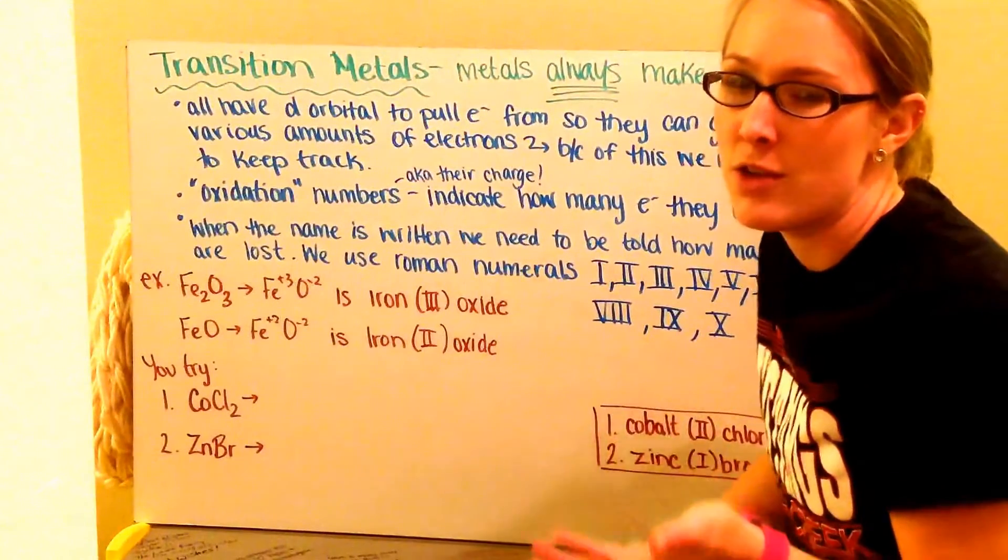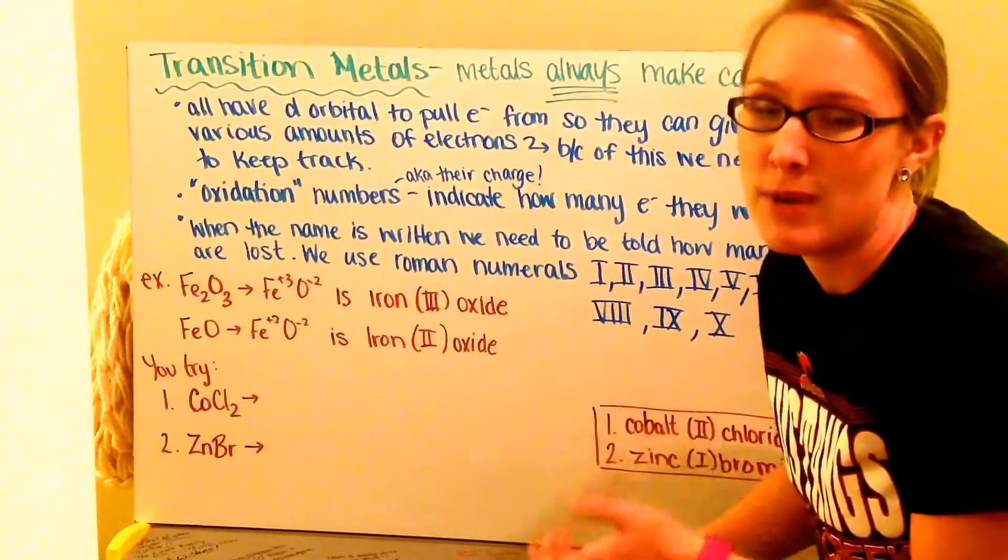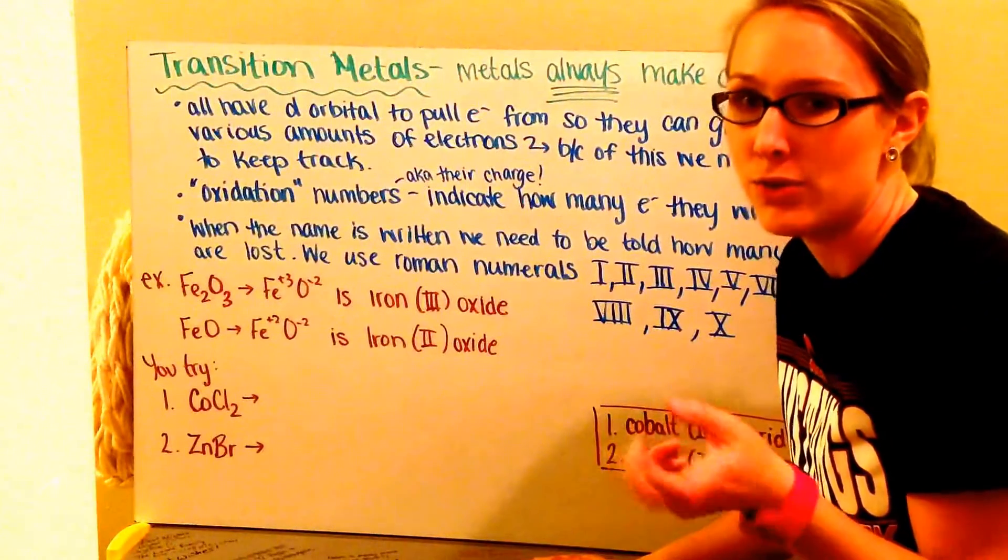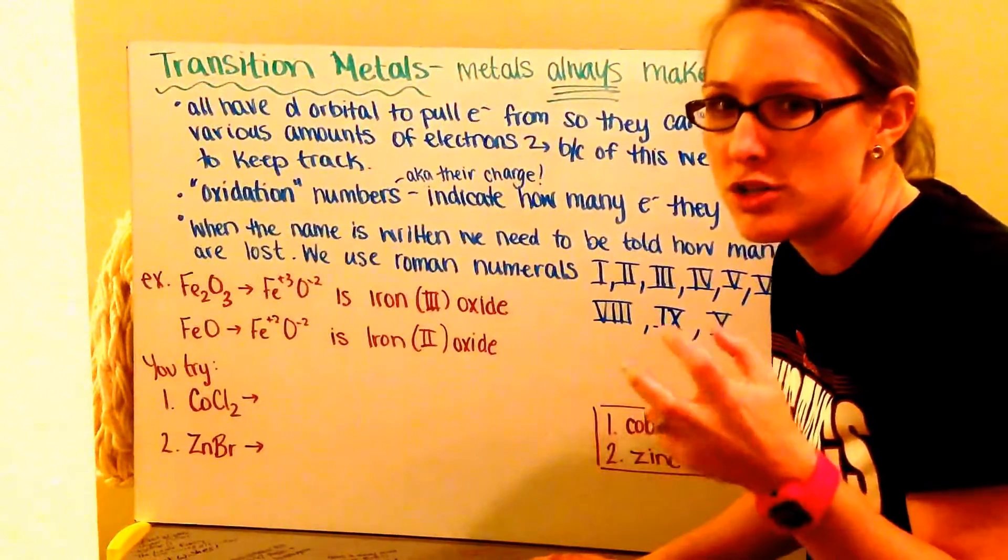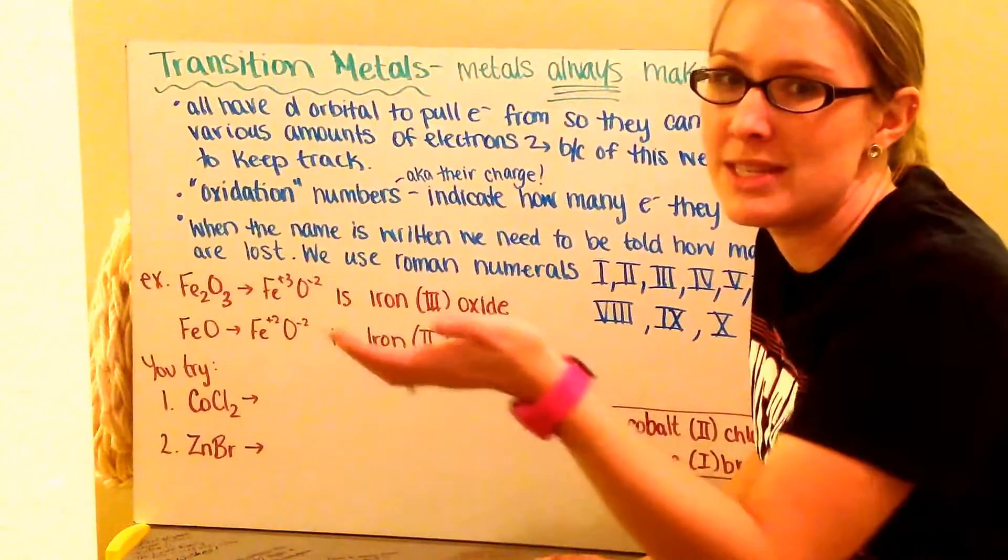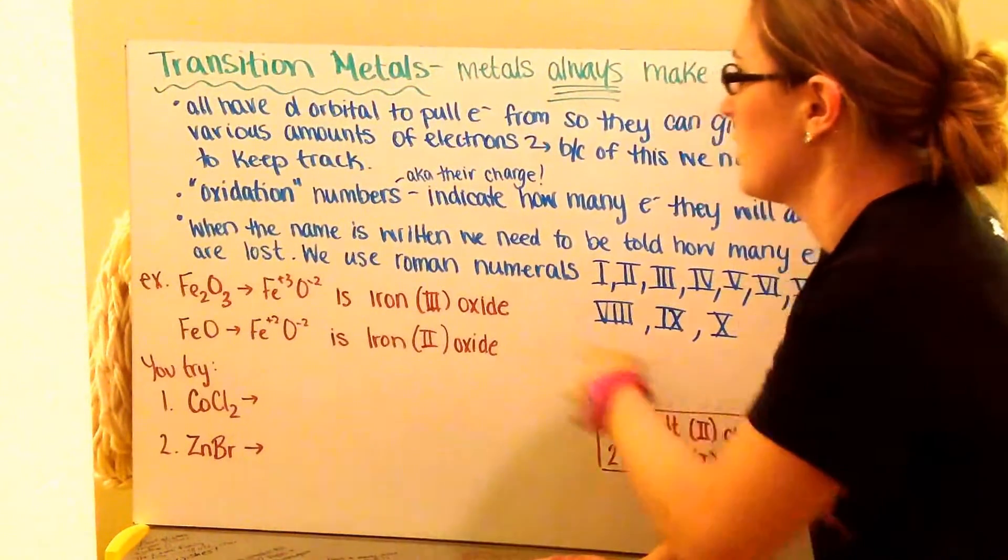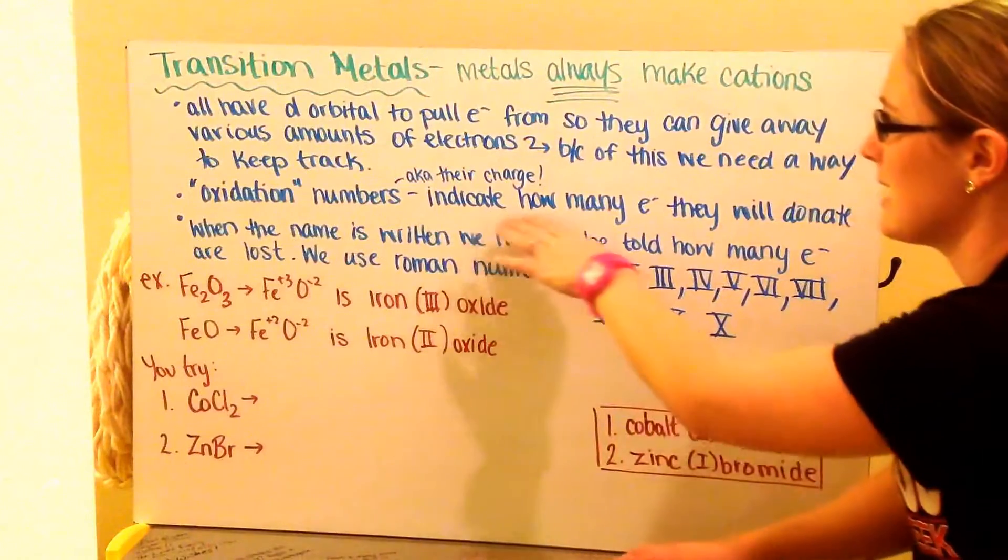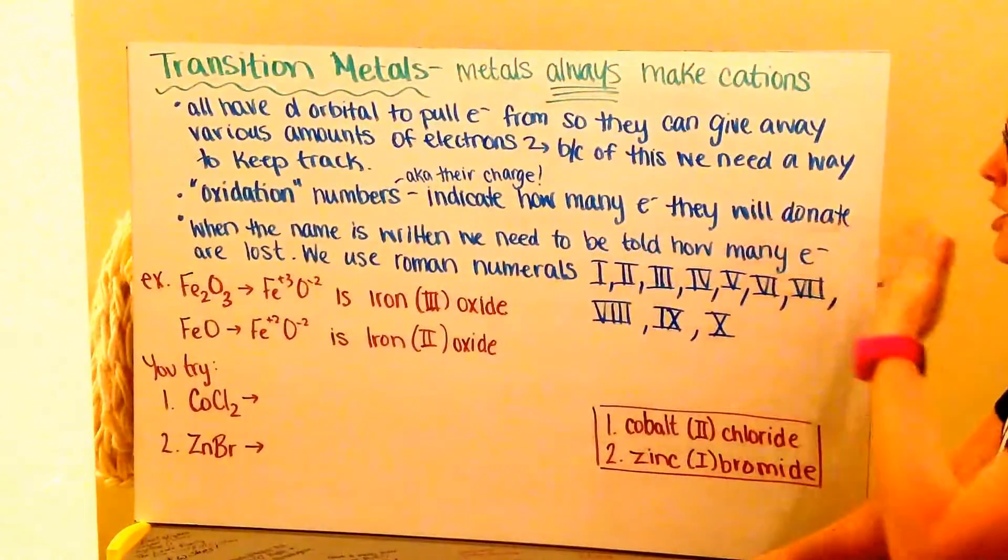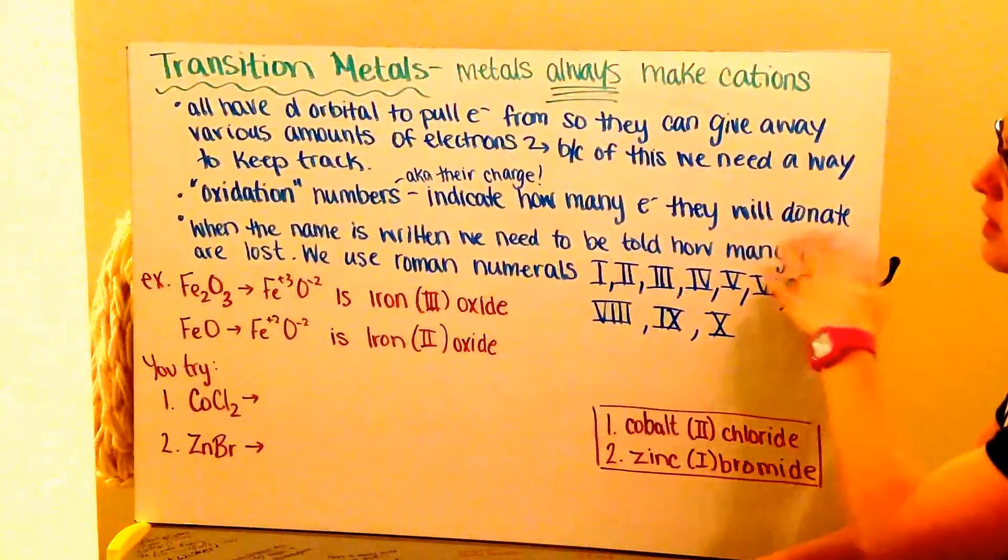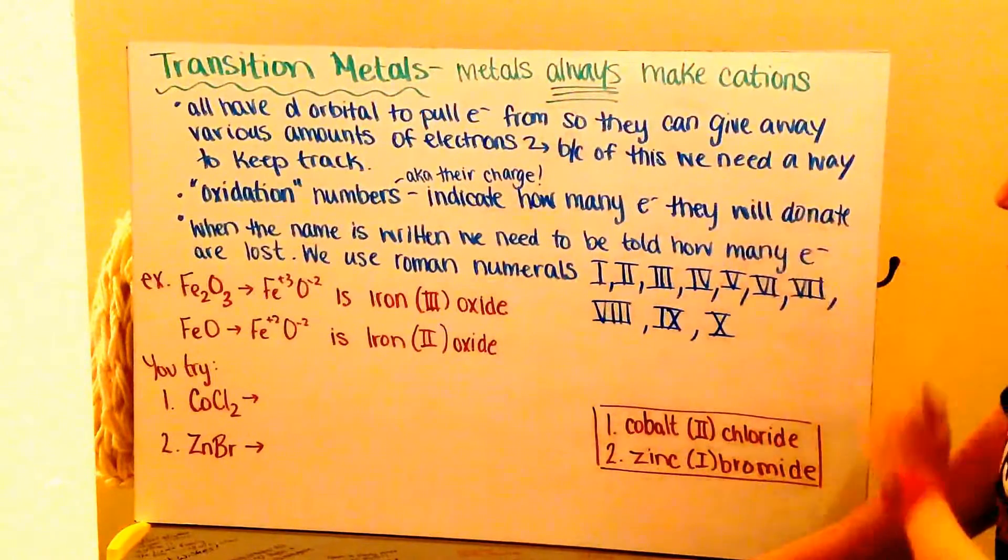Same as having fluorine minus 1 and nitrogen minus 3. Those negative 3 and negative 1 charges is the oxidation number. It tells you if it's gaining or losing electrons. These oxidation numbers indicate how many electrons they will either donate or receive, but with transition metals, they're just donating these electrons.